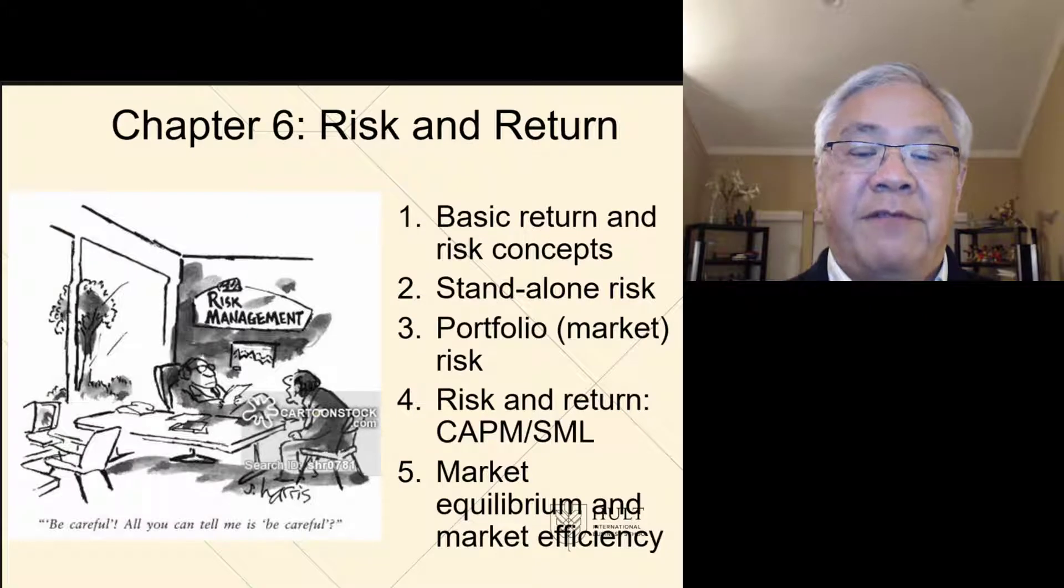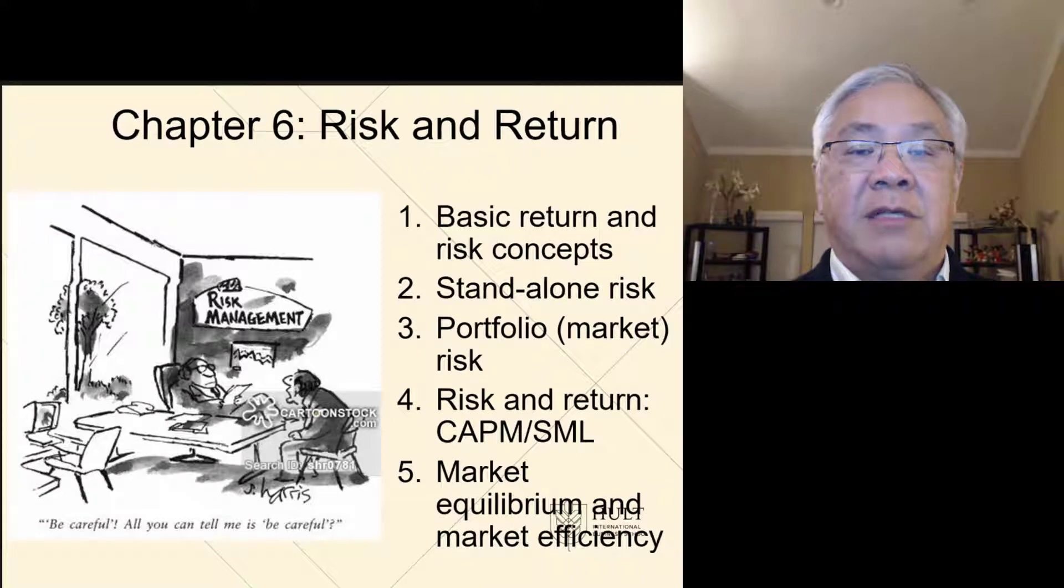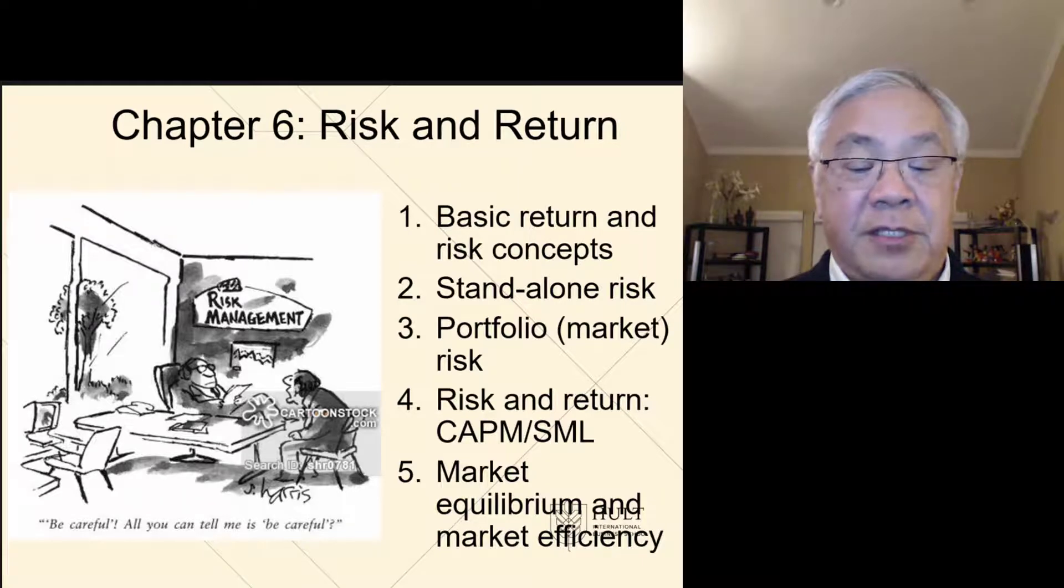We're going to look at five different learning objectives in this chapter. The first is basic return and risk concepts. Number two is the nature of standalone risk. Third is portfolio or market risk. And then looking at a central concept, which is the capital asset pricing model. We'll see implication of this throughout our book, relating not only to how the markets work, but also what is the required return that investors have for publicly traded companies. And the fifth learning objective is market equilibrium and the notion of market efficiency.